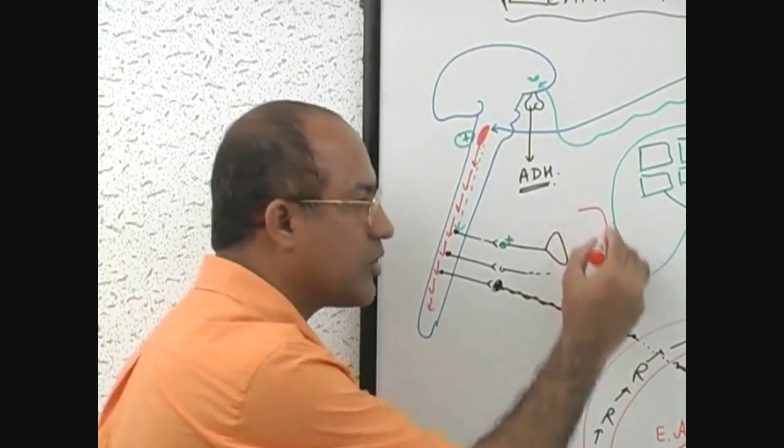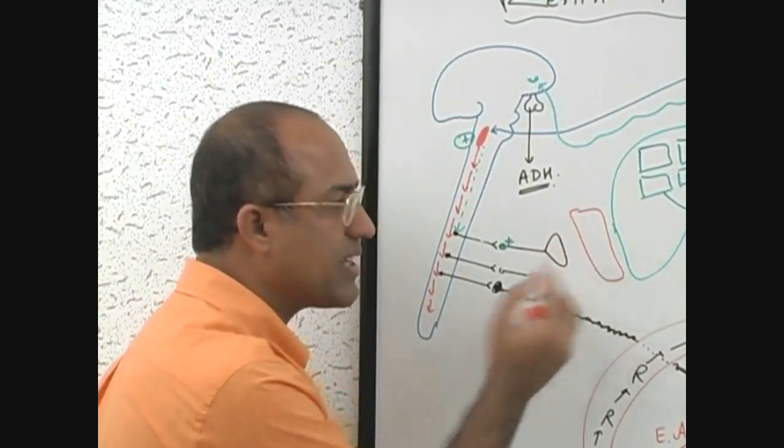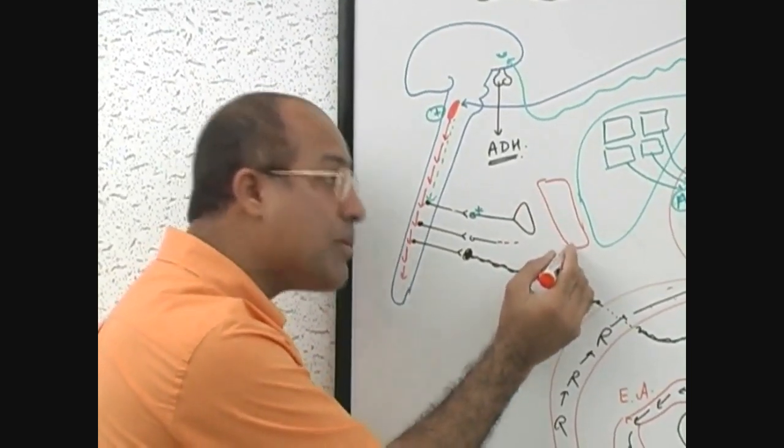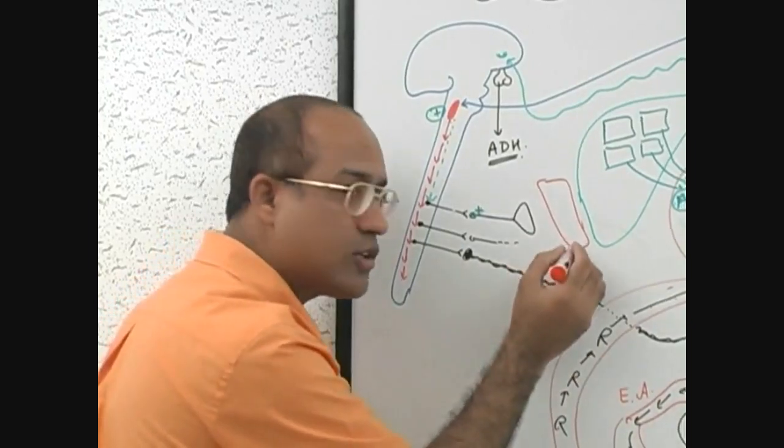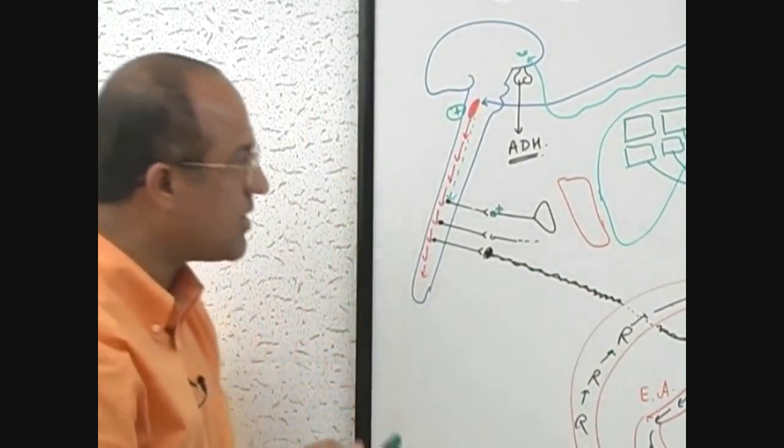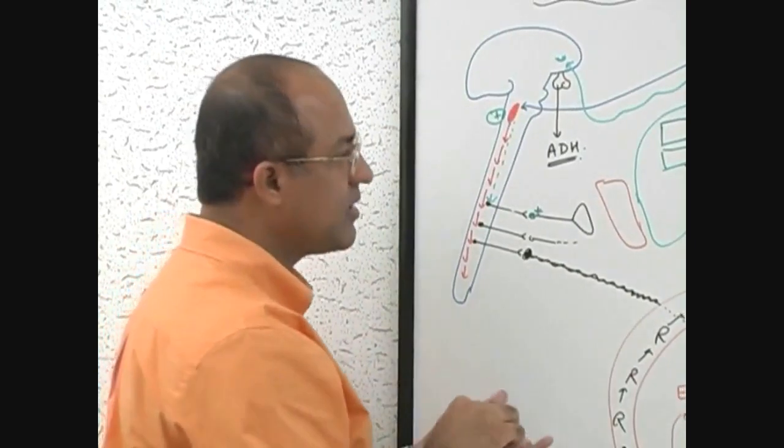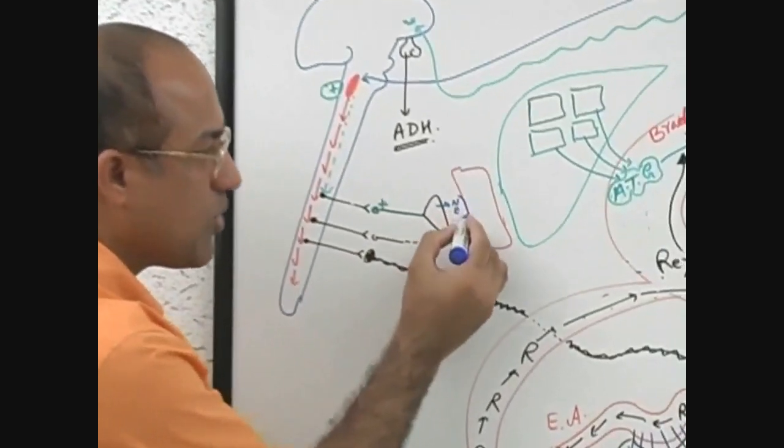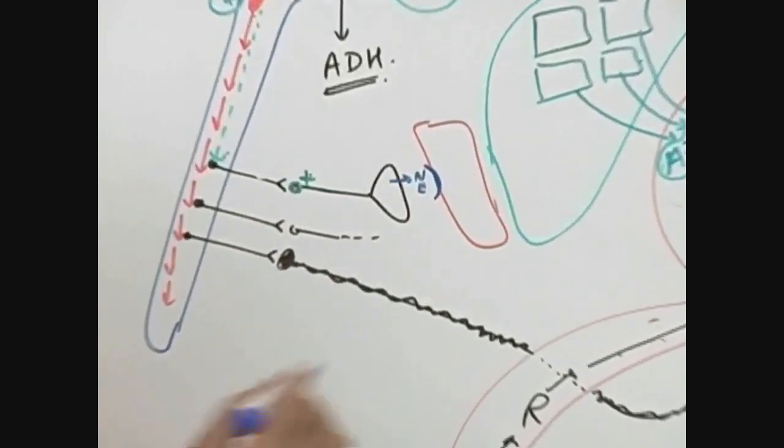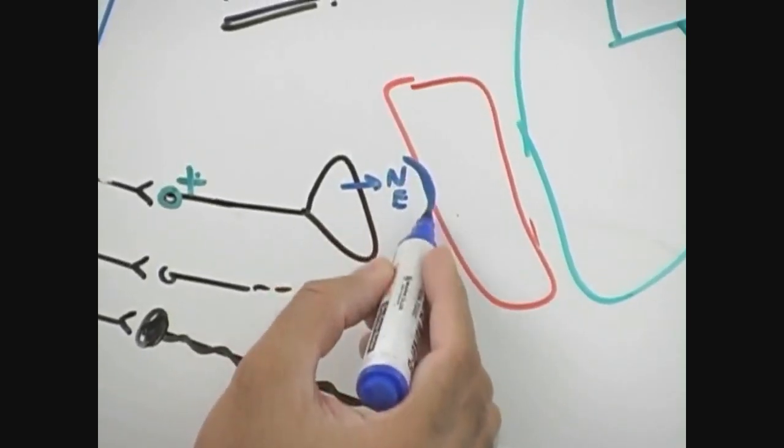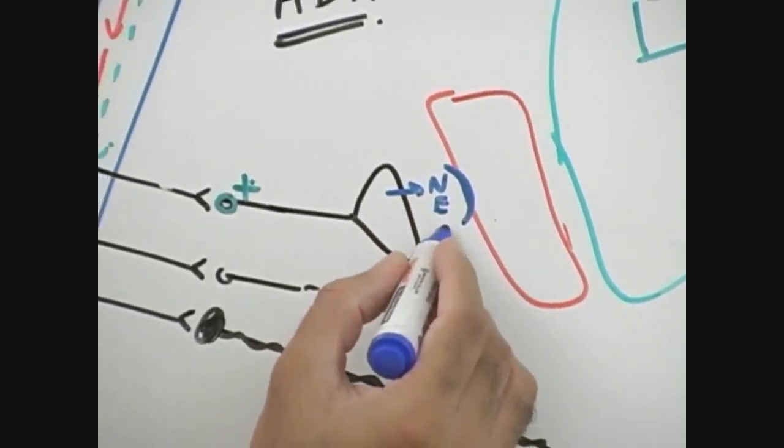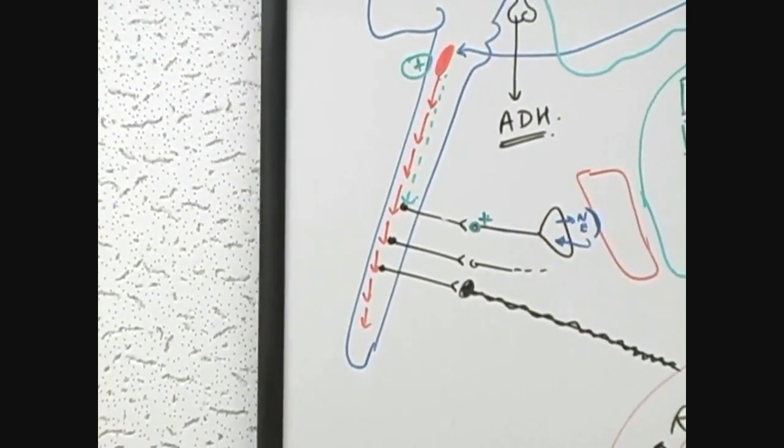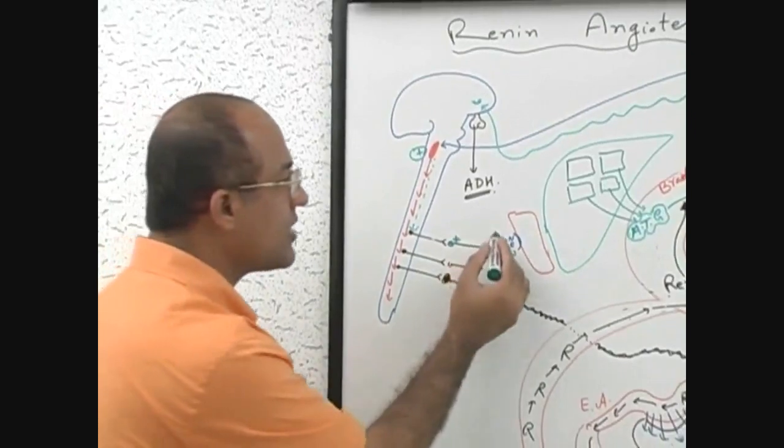Then if this is the postganglionic nerve ending, let's suppose this is the target tissue on which this nerve ending is ending. This target tissue may be venous smooth muscle, arterial smooth muscle, or this target tissue may be myocardium. Normally what happens, postganglionic sympathetic nerve endings release norepinephrine. Norepinephrine works on the receptors. And once norepinephrine is released and has done its action on the receptor, 80% of it is taken back by the nerve ending. This is normal physiology.